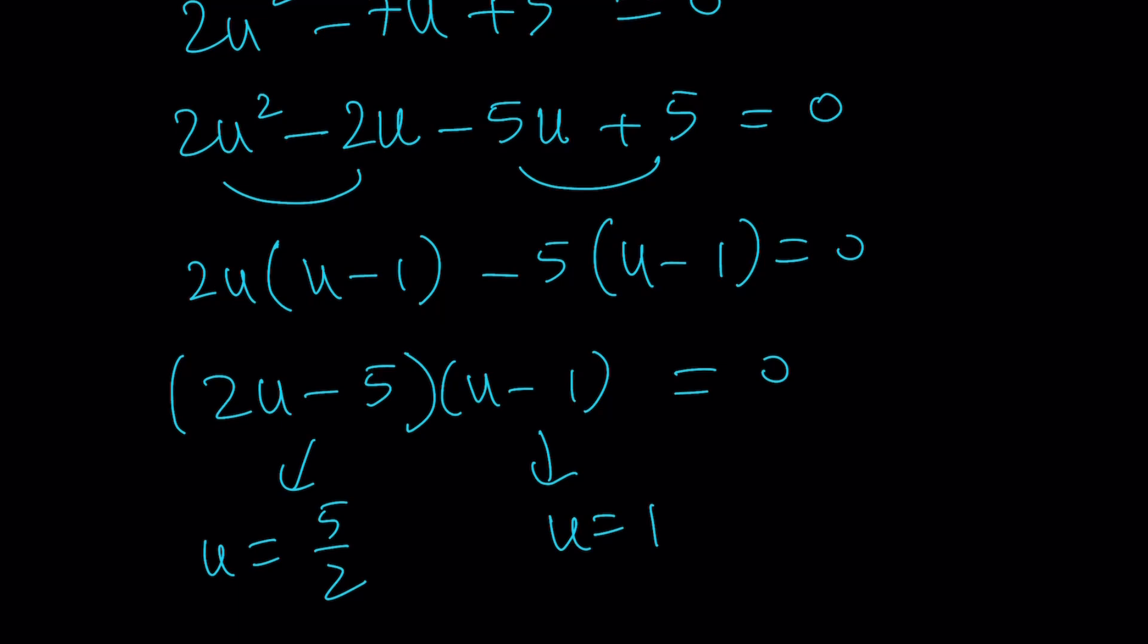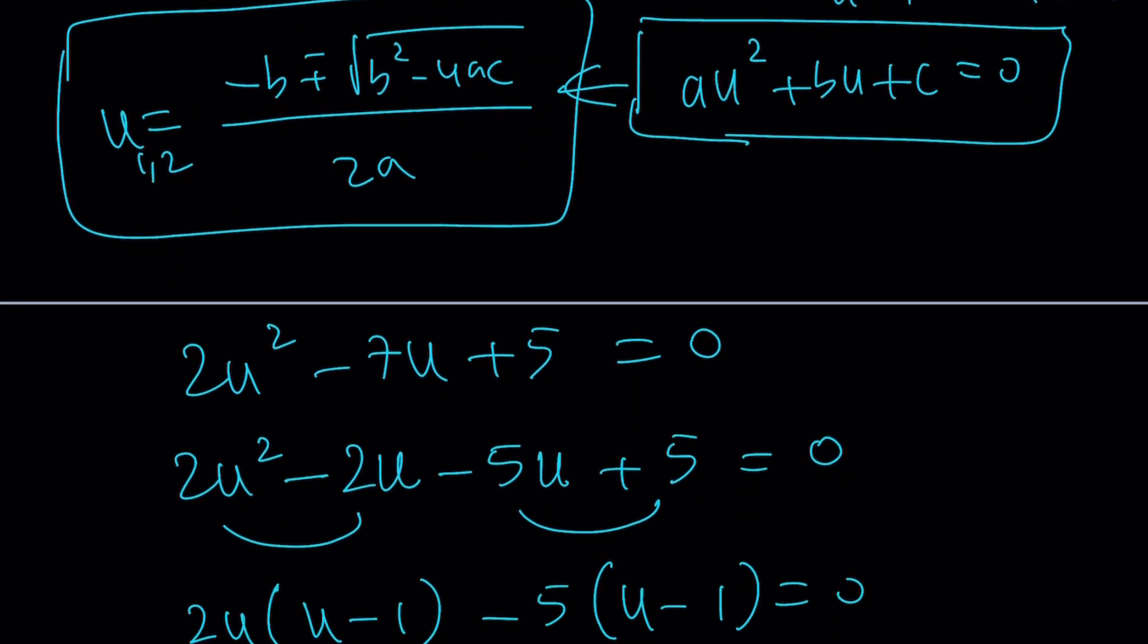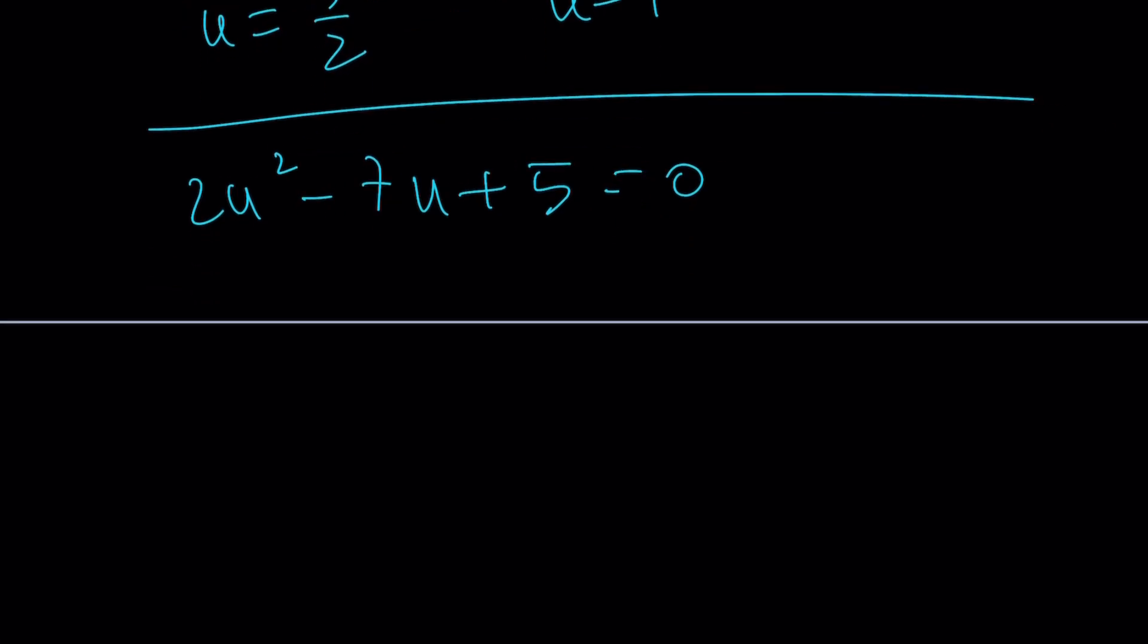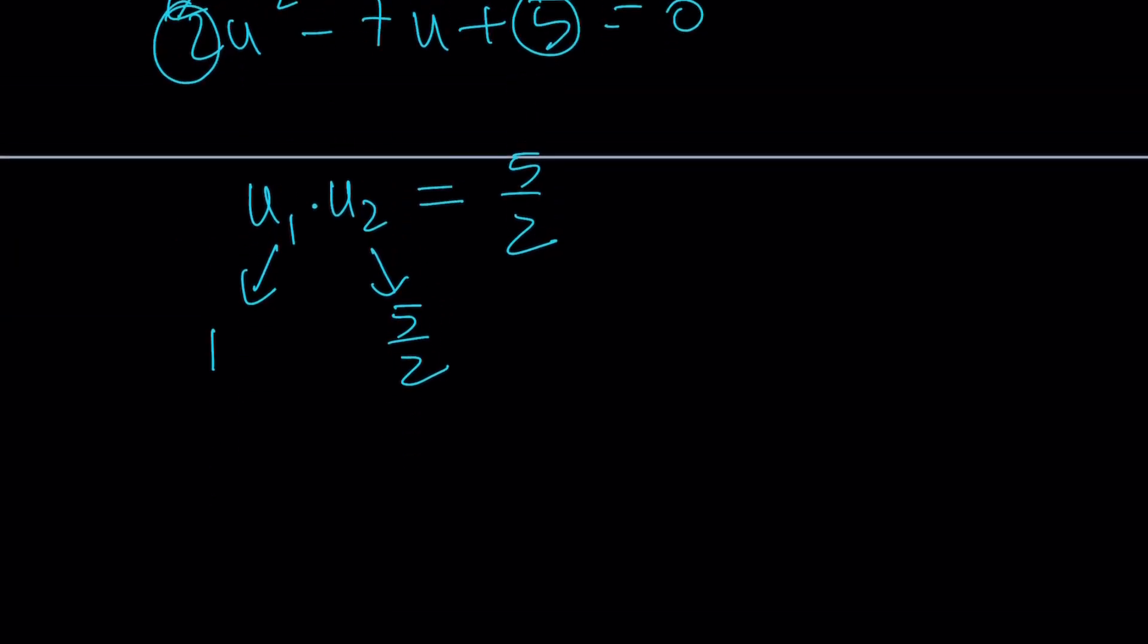Another way to find the other solution, once you know that u equals 1 works, let me also show you that because that's also a very cool approach. I made a video on Vieta's formulas. You can also go ahead and check that out. The other method is using Vieta's formulas. Vieta told us u1 times u2 is c over a, which is 5 halves. If u1 is 1, then u2 automatically is 5 halves. You see how powerful that is? Divide c by a and you got the product of roots.